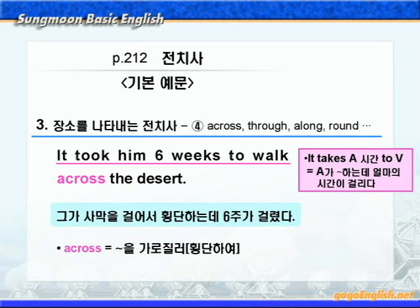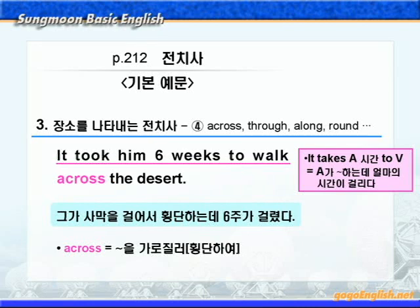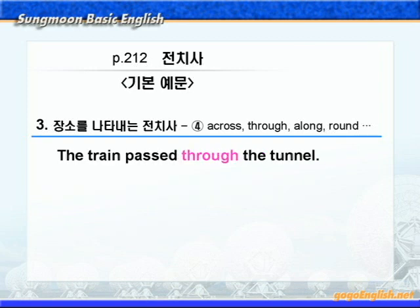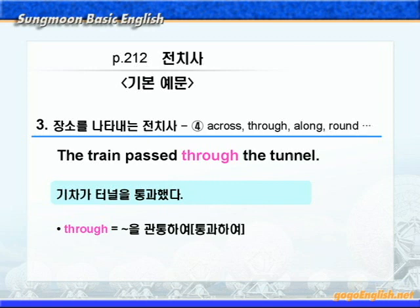그런데 across가 '뭐뭐의 건너편에'라는 뜻으로 쓰일 때도 있습니다. 여기 across는 '건너편에'라는 뜻이니까, '버스 정류장은 바로 길 건너편에 있다'가 되겠습니다. 비교해서 알아두세요. 다음으로 through를 살펴보죠. through는 '뭐뭐를 관통하여' 혹은 '통과하여'라는 뜻이니까, '기차가 터널을 통과했다'는 간단한 해석이 됩니다.